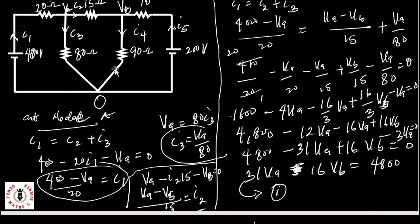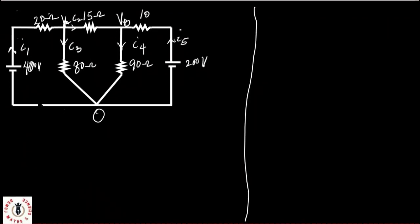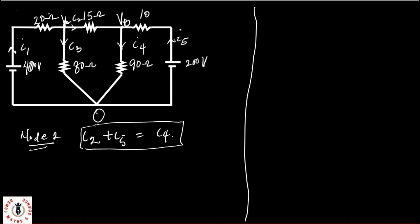Now we'll do the same thing again for node 2. At node 2, we have I2 entering the network and we have I5 also entering, so that I2 plus I5 will be equals to I4. I4 is leaving the network. Now let's define our equations for each of the currents. We've established that I2 equals (VA minus VB)/15, and we should know that I4 equals VB/90.